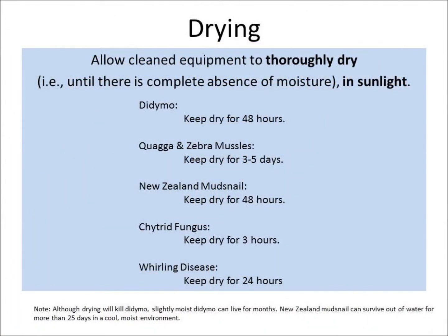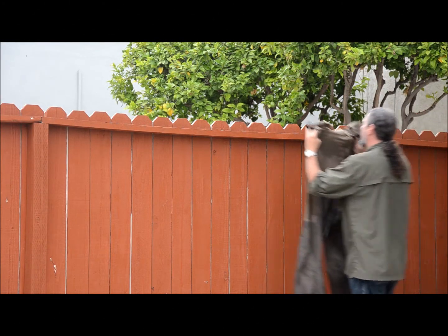The first method we'll look at in controlling aquatic invasive species on your equipment is through drying. Allow cleaned equipment to thoroughly dry in sunlight. Note that there is a varying amount of time needed to control various aquatic invasive species — it can range from keeping equipment dry for three hours for Ketrid fungus, to keeping your equipment dry for three to five days for quagga and zebra mussels.